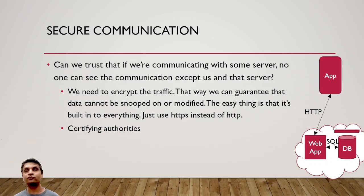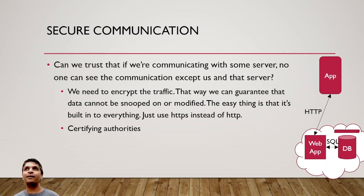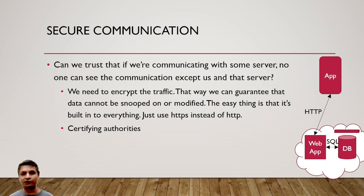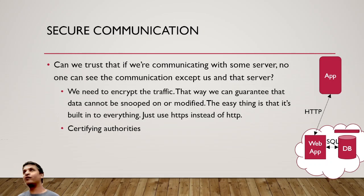FNB just sends me their public key — it's publicly known, so there's no danger. I use it to encrypt and send back a message, they use their private key to decrypt. Now we can guarantee there'll be no man in the middle modifying the message. But there's still a problem: how do I know the person I'm talking to is actually FNB? What if they just sent me their own key and claimed to be FNB? This is where certifying authorities come in — things like Thawte and VeriSign. Mark Shuttleworth, the guy behind Ubuntu, is a South African billionaire because he started a certifying authority. They validate that a server has a particular key.